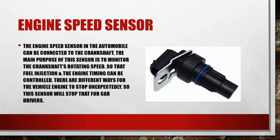The engine speed sensor in the automobile can be connected to the crankshaft. The main purpose of this sensor is to monitor the crankshaft's rotating speed so that fuel injection and engine timing can be controlled. There are different ways for the vehicle engine to stop unexpectedly, so this sensor will prevent that for car drivers.